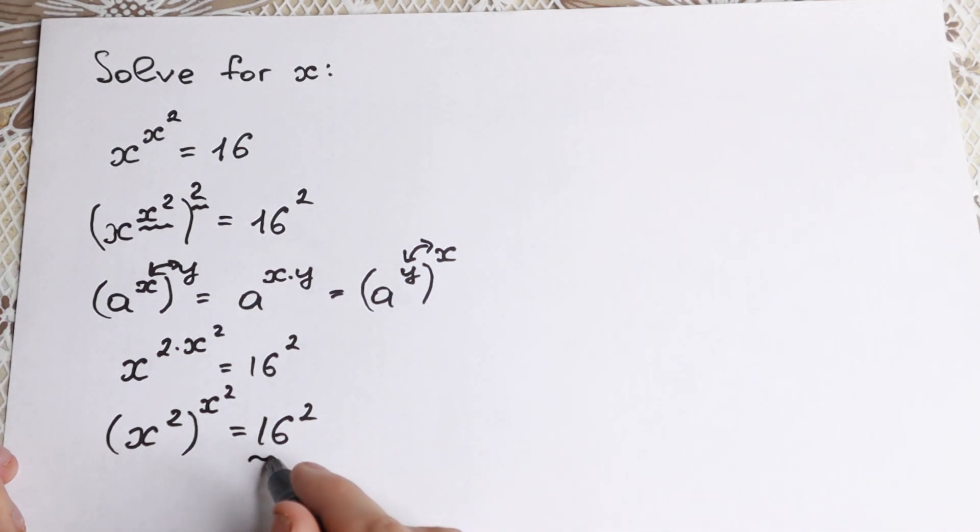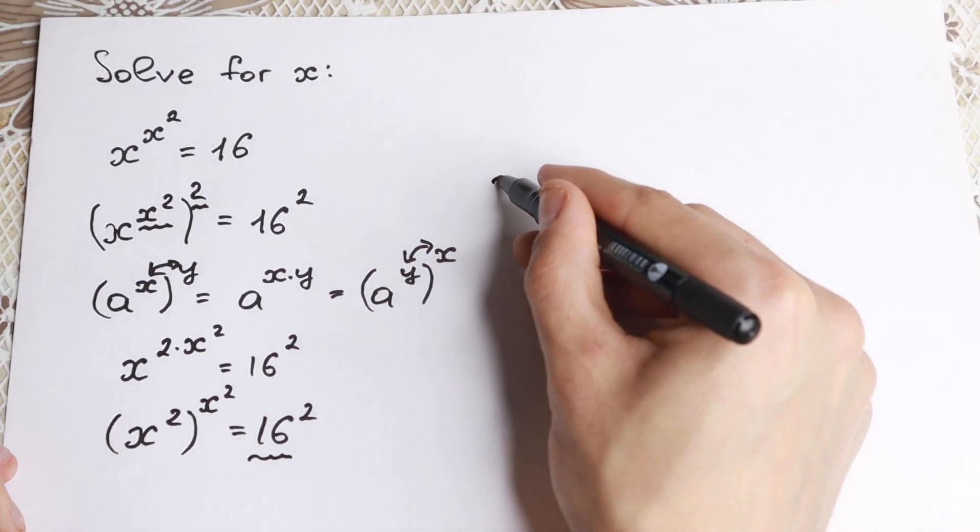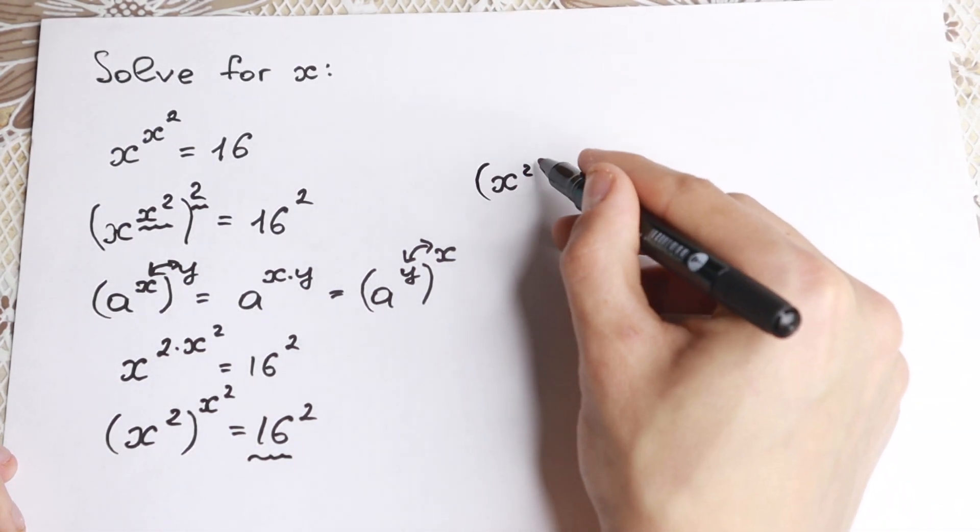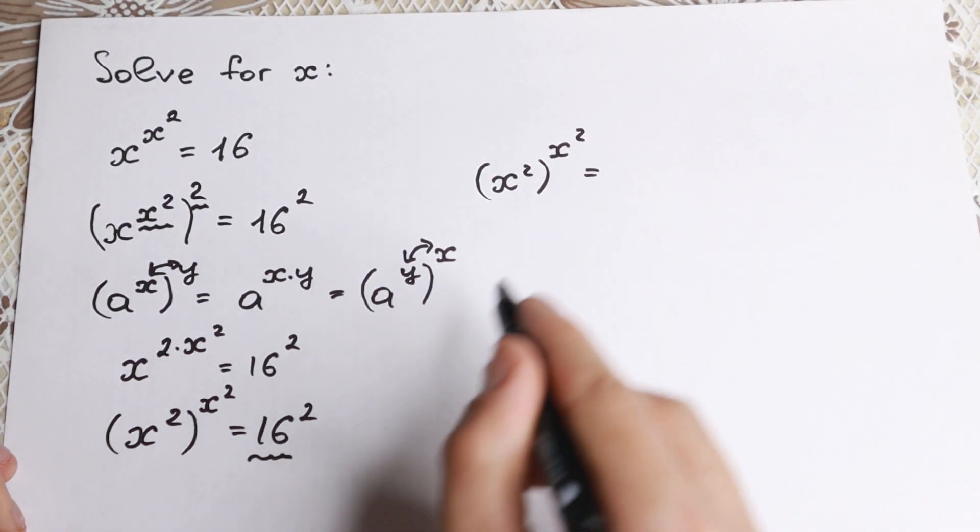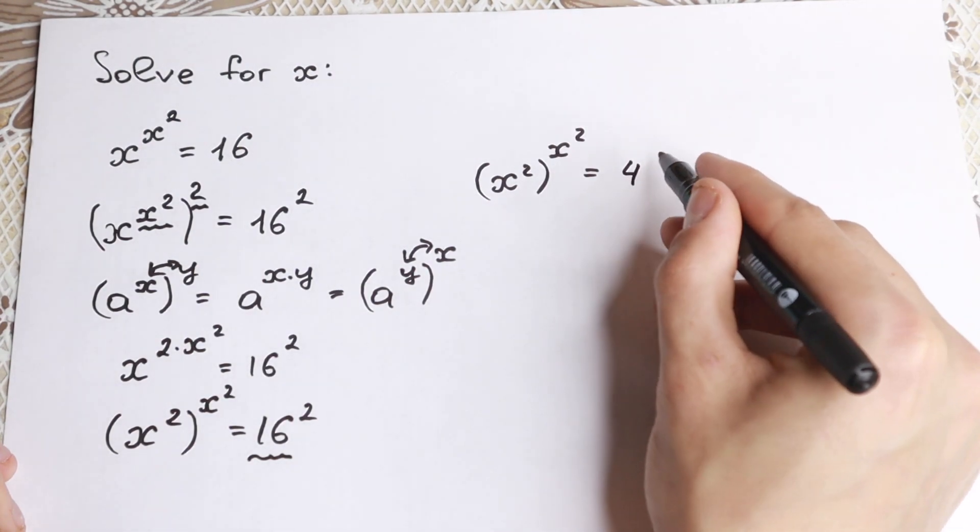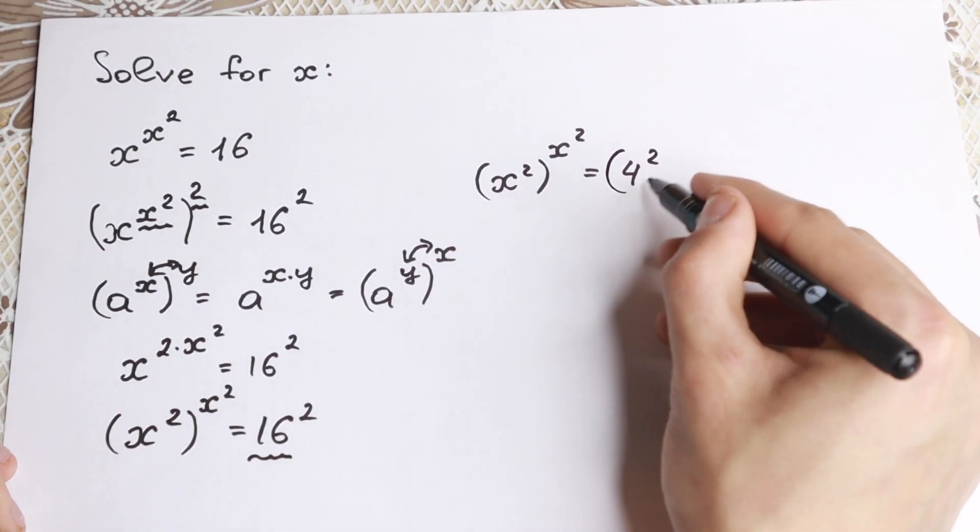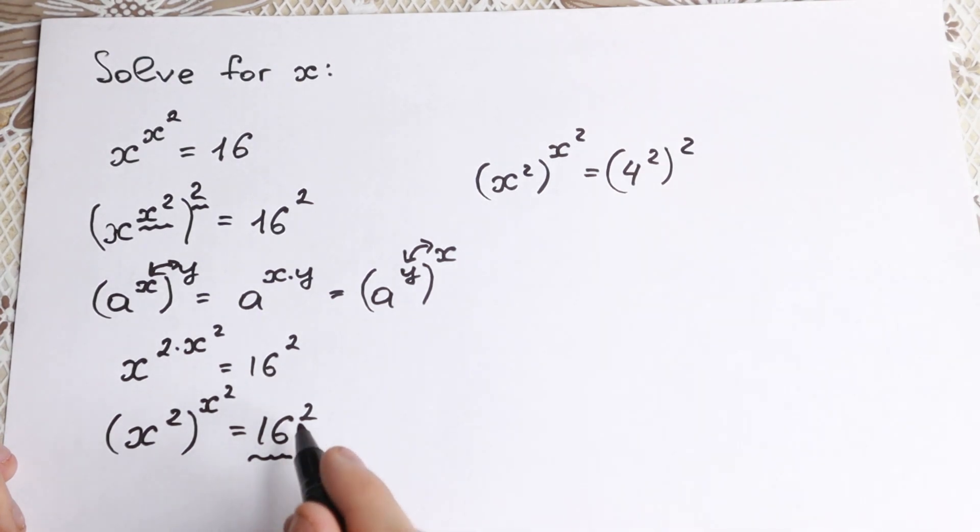Because right now we are going to simplify this right hand side. So we have x squared to the power x squared equal to... And right now let's write this 16 as 4 squared. If we write it as 4 squared and of course squared because we have second power right here.